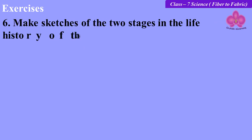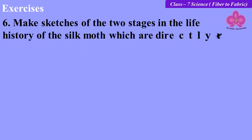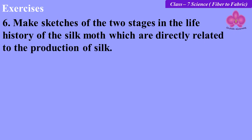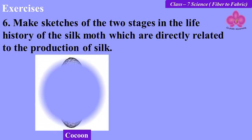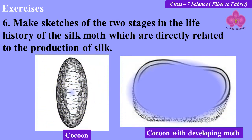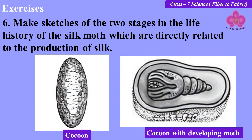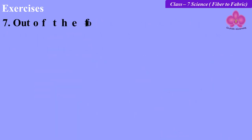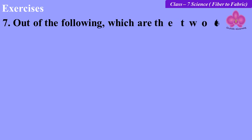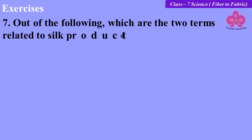Make sketches of the two stages in the life history of the silk moth which are directly related to the production of silk. Look at the pictures given of the cocoon and the cocoon with developing moth, and draw them accordingly. Out of the following, which are the two terms related to silk production? Sericulture, floriculture, moriculture, apiculture, and silviculture.